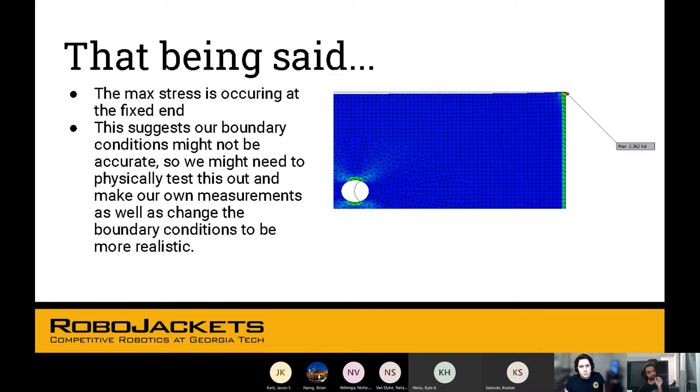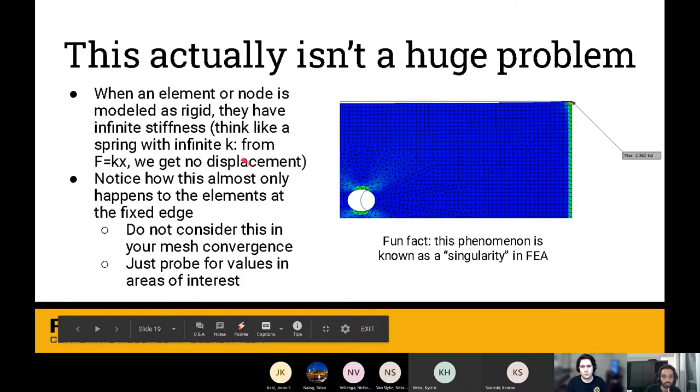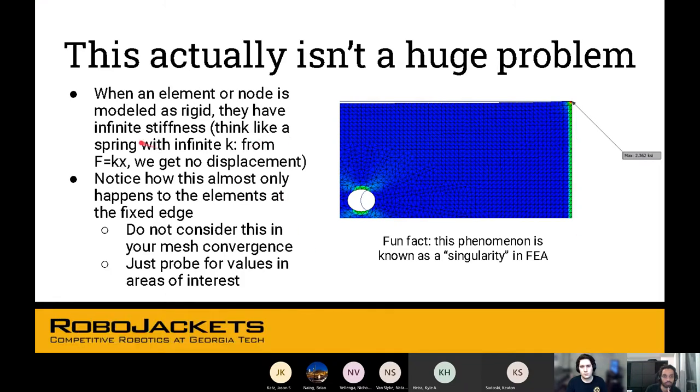When we set the boundary condition to be fixed, the computer just straight up sets the displacements to zero. In real life, that's not possible because even if you superglued this bar with a hole in it to a wall, there could be some issues. Maybe the superglue wasn't applied uniformly, or a high enough force should be enough to remove the superglue. That's not a big issue. We can always physically test this out and make our own measurements. Because the computer assumes this is a perfectly fixed end, it'll assume that the stiffness of the elements there is infinite. It acts as though it has infinite stiffness.